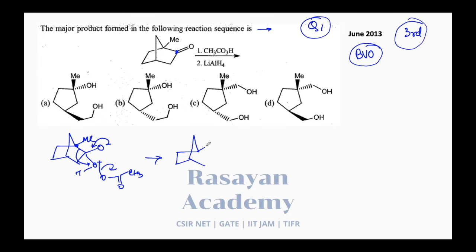So the product has oxygen inserted — oxygen comes over here and this is your carbonyl. This should be the product of the reaction: oxygen insertion on the more substituted carbon-carbon bond, because a tertiary carbon migrates better than a secondary carbon.